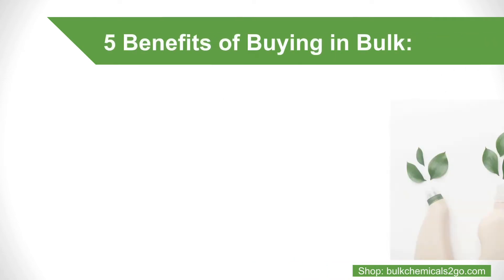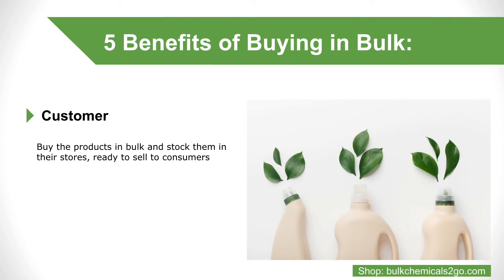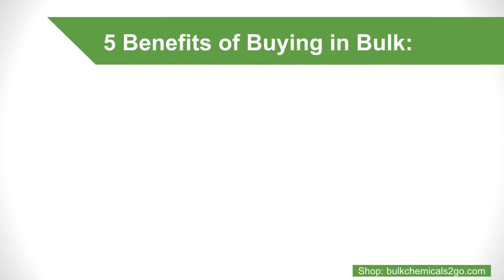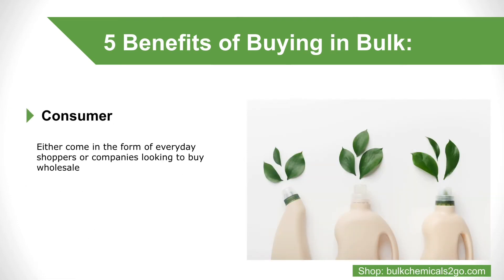5. The Customer: Big box stores or other companies buy the products in bulk and stock them in their stores, ready to sell to consumers. 6. The Consumer: Consumers either come in the form of everyday shoppers or companies looking to buy wholesale. Either way, the consumer buys the product for use. The product has now reached the end of the supply chain and successfully made it into the hands of the consumer.